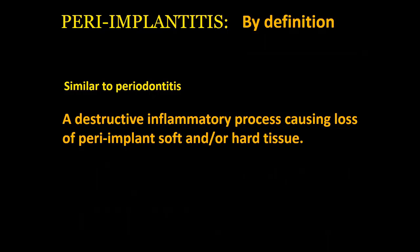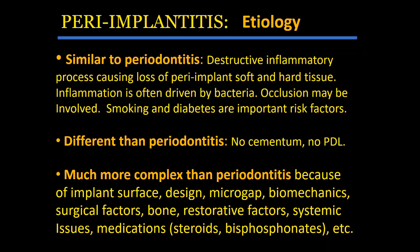By definition, peri-implantitis is an inflammatory process, similar to periodontitis. There are many common factors between peri-implantitis and periodontitis, but there are also differences. There is obviously no cementum and no periodontal ligament around implants. Factors unique to peri-implantitis include implant design, surface roughness, micro-gap, and biomechanics of the implant components.